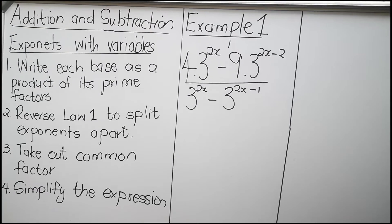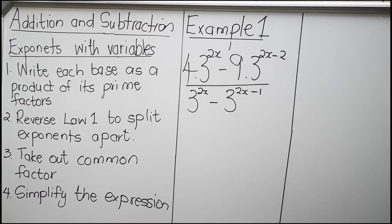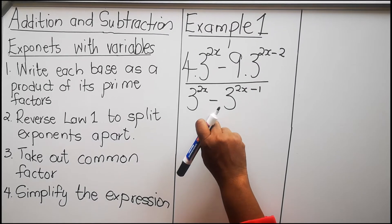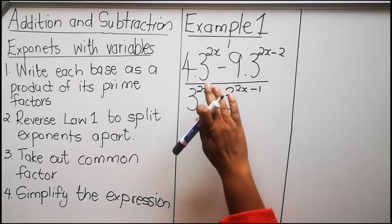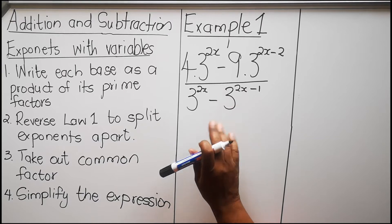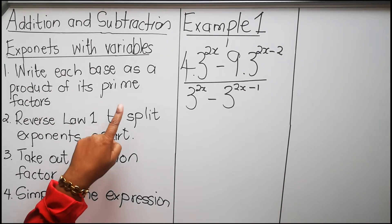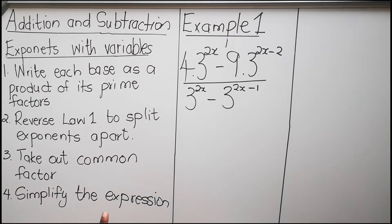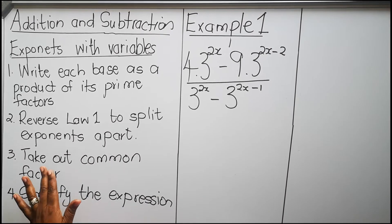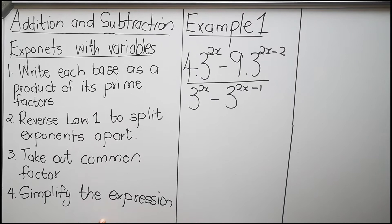When you are adding exponents, you will see you will either have a plus or minus. Number 1, you can cancel — it means we have like terms. So if you have like terms, you can cancel. We are going to write each base as a prime factor. You can use the calculator to do that. We are going to reverse Law 1, take out a common factor, and then we simplify.